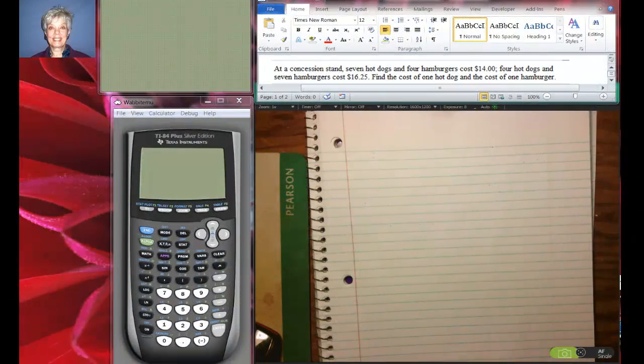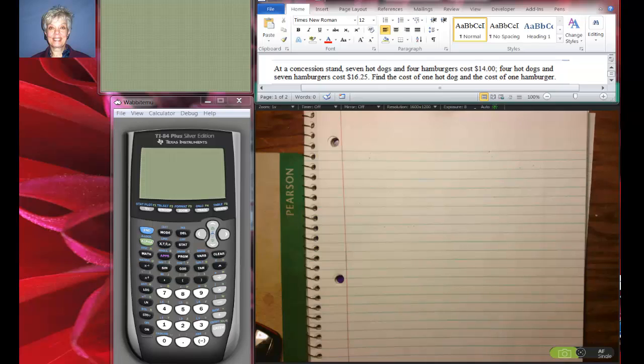Hi, this is Barbara Rademacher again and we're going to eat hot dogs and hamburgers. At a concession stand, seven hot dogs and four hamburgers cost $14.00. Four hot dogs and seven hamburgers cost $16.25. Find the cost of one hot dog and the cost of one hamburger.